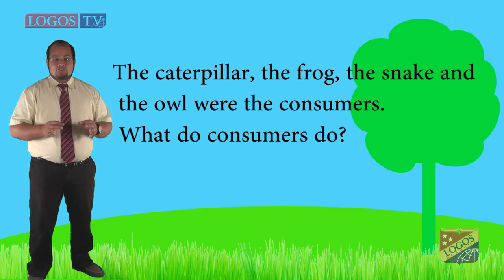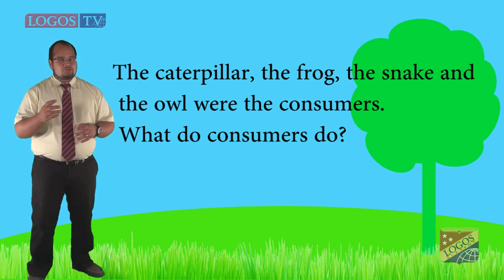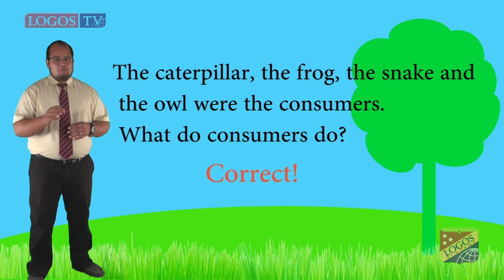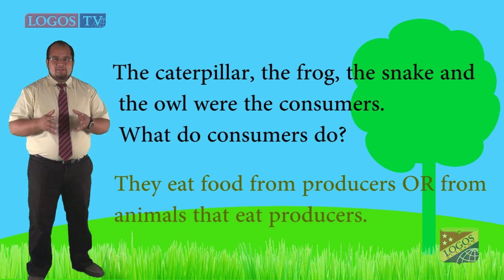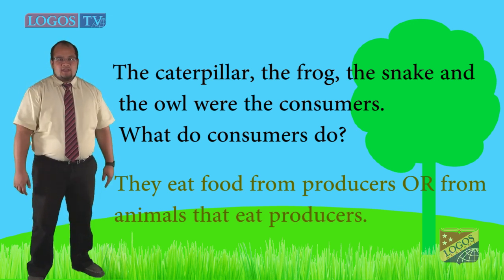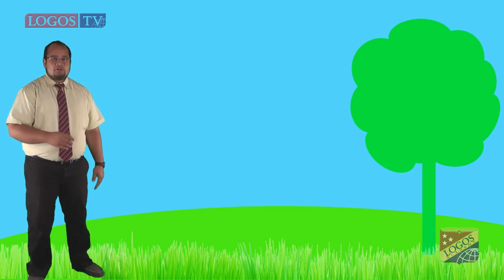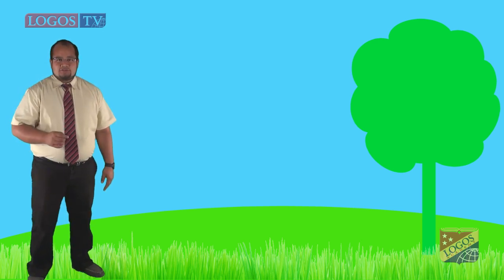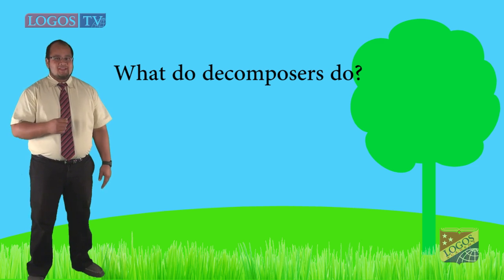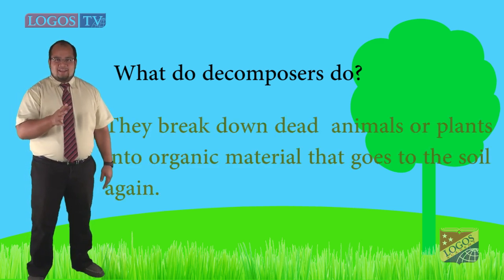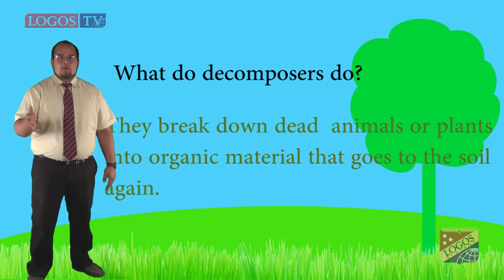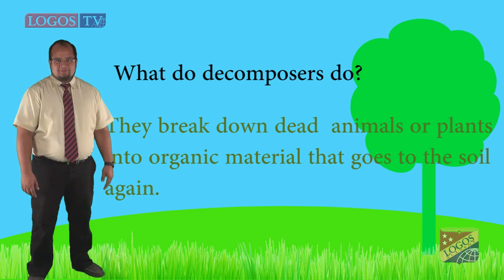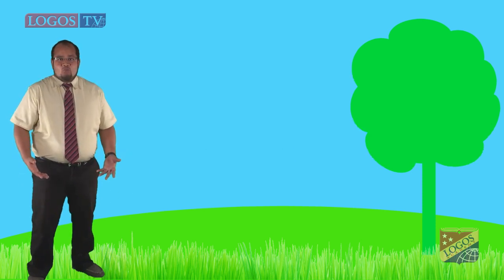The caterpillar, the frog, the snake, and the owl were the consumers. What do consumers do? Correct, they eat food from producers or from animals that eat producers. After the owl died, the nutrients went back to the soil due to the decomposers. What do decomposers do? They break down dead animals or plants into organic material that goes back to the soil again.